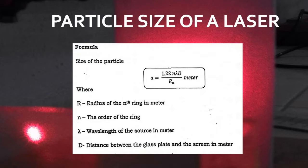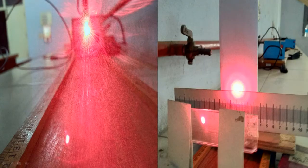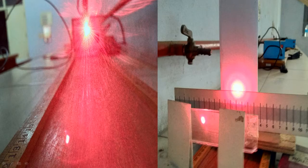Determination of the particle size: When laser light is passed through a glass plate spread with fine particles, the light gets diffracted by the particles and the diffracted light produces concentric rings on the screen. The particle or grain size is determined by measuring the radius of the rings.